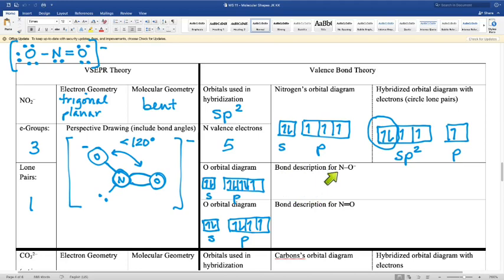This is asking for the bond description for that nitrogen-oxygen single bond, and this is for the nitrogen-oxygen double bond. Single bond, sigma bond. So there's going to be a sigma here. The double bond means I have a sigma bond and a pi bond.